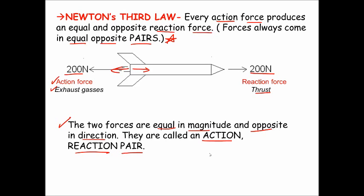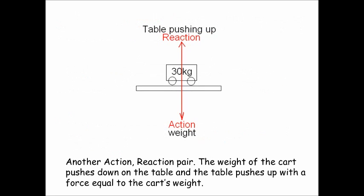Let's see how that affects other objects, not just rockets. Here is a cart — a wagon — that appears to be sitting on a tabletop. The mass of the cart is 30 kilograms, and that gives it a weight that acts downward of about 300 Newtons. Since it's acting downward, we can call that negative 300 Newtons.